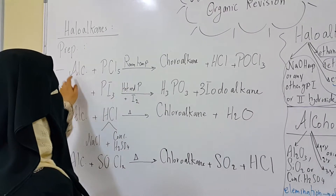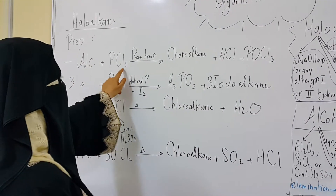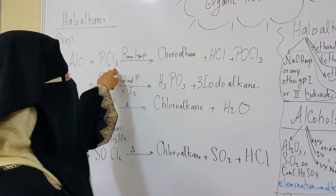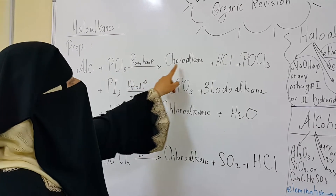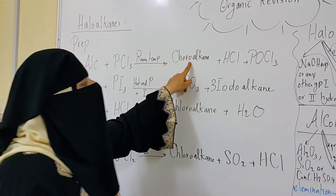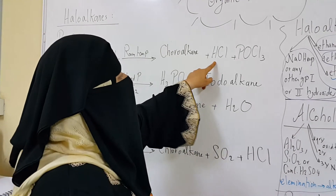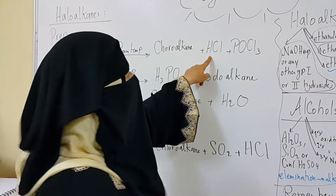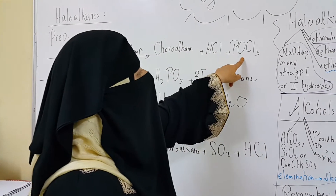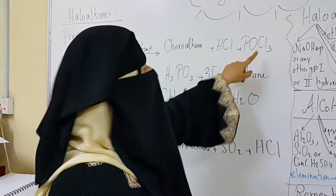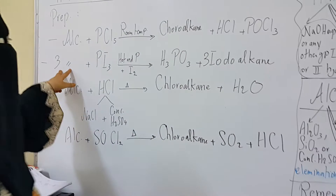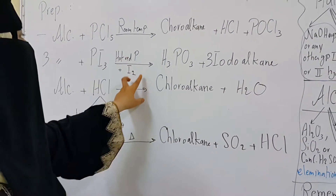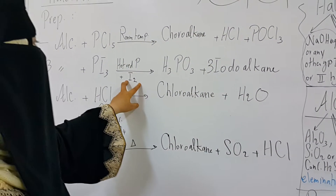Halo-alkanes are prepared by reaction of alcohols with phosphorus pentachloride at room temperature to give a chloro-alkane and HCl gas, which appears as white smoky fumes, and phosphorus oxytrichloride.